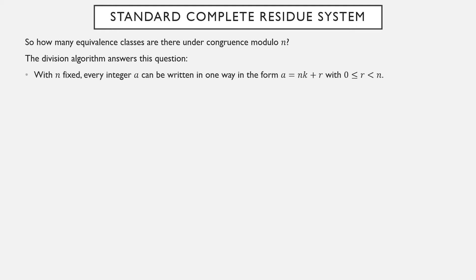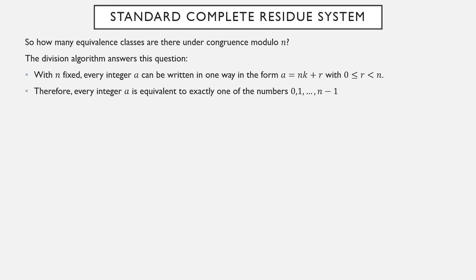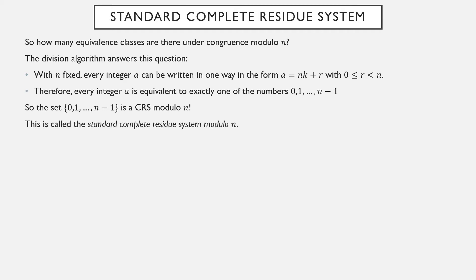Once n, a positive integer, has been fixed, every integer can be written uniquely in the form of a multiple of n plus a remainder r, where 0 ≤ r < n. So every integer a is equivalent to exactly one number from the list 0 through n minus 1. Therefore 0 through n minus 1 forms a complete residue system modulo n — every integer is equivalent to one of them, and no two elements in this list are equivalent to each other modulo n because they all have different remainders under the division algorithm. This is what we call the standard complete residue system modulo n, or standard CRS mod n — the integers 0 through n minus 1. It's not the only complete residue system we'll ever use, but it's the most straightforward under most circumstances.